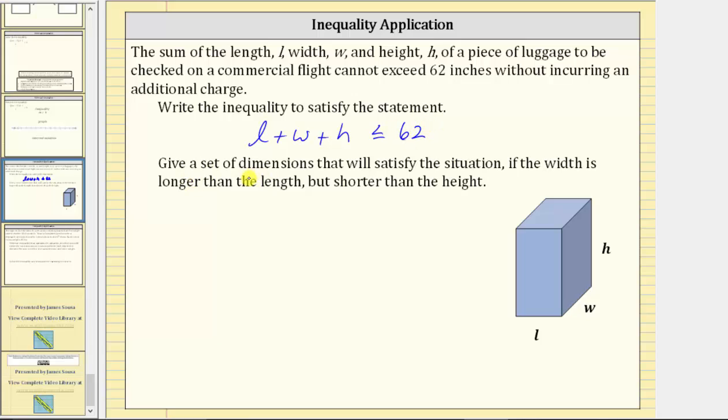Next, give a set of possible dimensions that will satisfy the situation given by this inequality and the width is longer than the length, meaning W is greater than L, and shorter than the height, meaning W is less than the height.